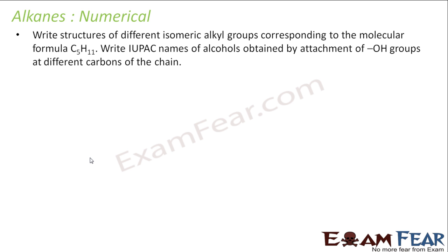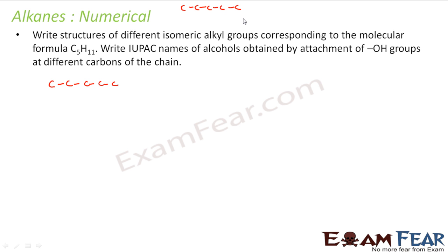So I have C5H11 — 5 carbons. I have to see in how many ways I can arrange this, and then once I have arranged this, I have to see in how many ways I can attach an alcohol group to it. One option is to arrange this in the straight chain. The next option is, instead of 5, I will take 4 carbons and put 1 carbon as a branch. This is one isomer.